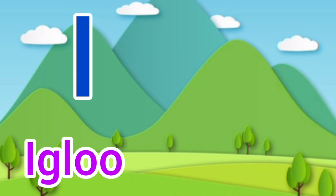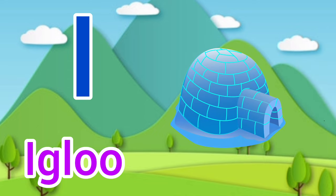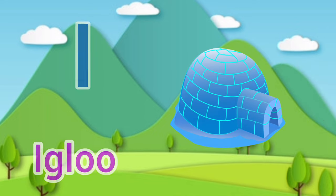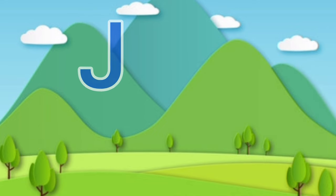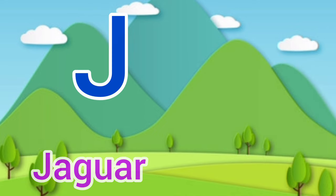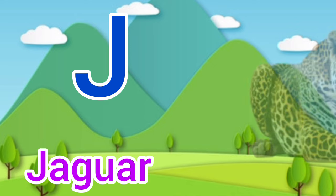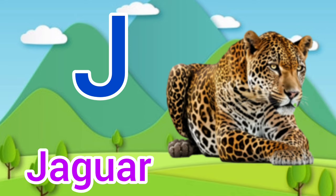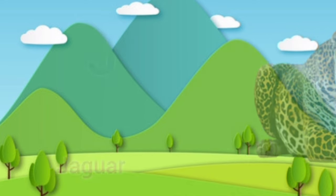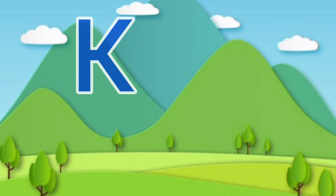I for igloo, igloo means igloo. J for jaguar, jaguar means tendua.